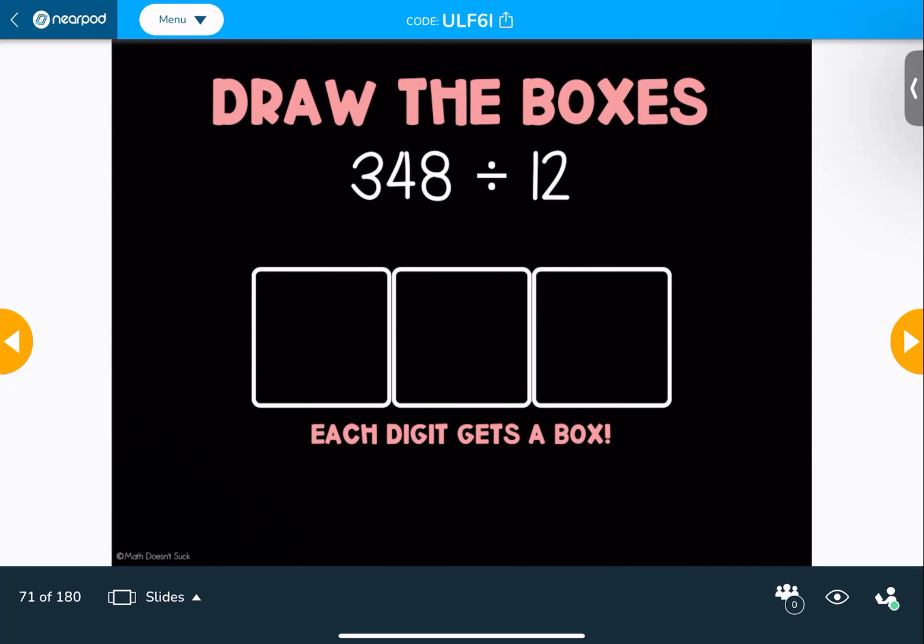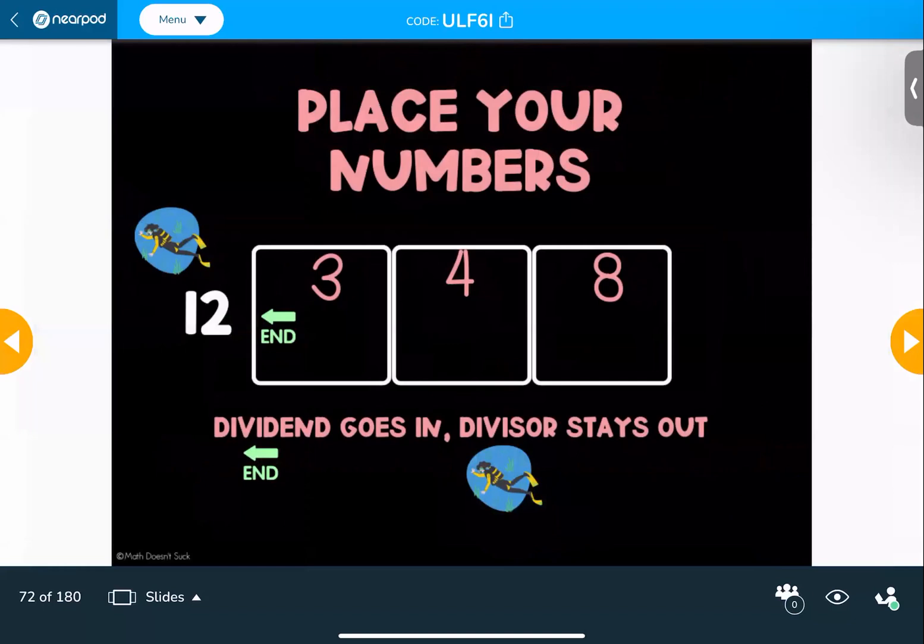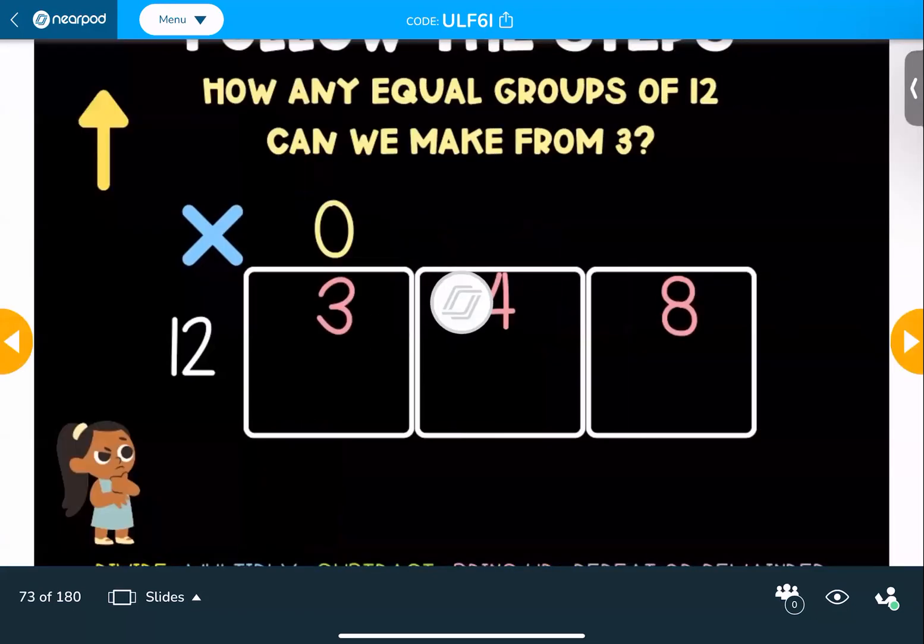So the first thing that we need to do is the number that's being divided, each digit is going to get its own box. So since we're dividing the number 348, three-digit number, we get three boxes. Then we take the number and we're going to write it in the top of the boxes so that we have some space to do math underneath them. So 348 each gets its own box, and the number that is dividing or is the divisor, it's diving in, it's going to go outside of our boxes. All right, we're set up and we're ready to go.